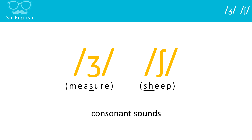Here are the next pair of consonant sounds we're targeting: ZH as in 'measure' and SH as in 'sheep.' So we have two sounds here. The first sound is not a very common sound in English, but it's good to cover it anyway.